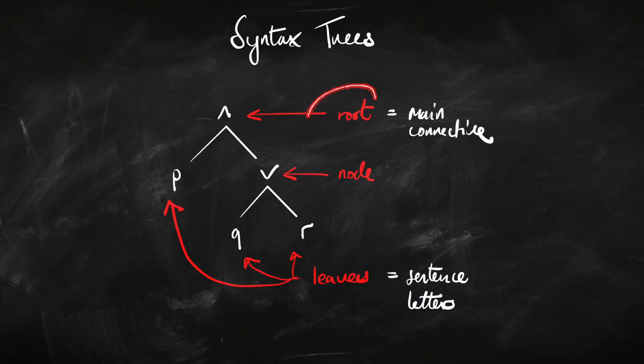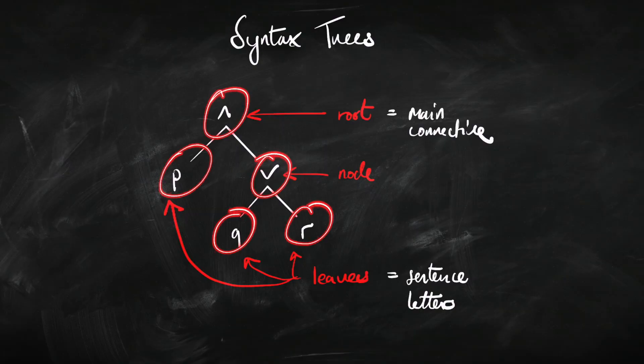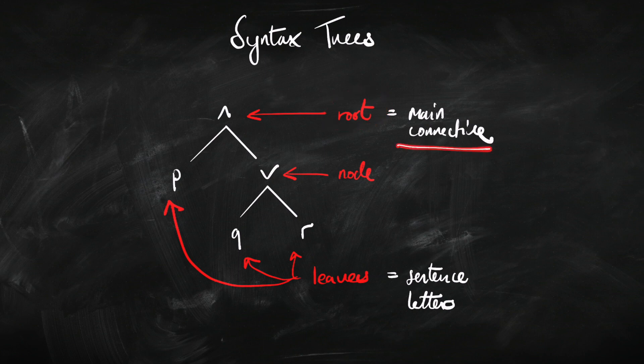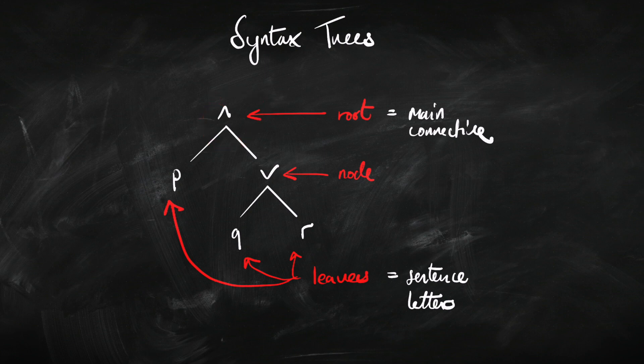Some terminology for trees: the bit at the top is called the root. In logic, trees are drawn upside down, so the root is at the top. The bits where you can't go any further are called leaves, and everything that isn't a line is called a node. In a syntax tree, the root is the main connective of the sentence — that's an important concept. The leaves are always sentence letters, so when drawing a syntax tree you need to deconstruct the sentence all the way down to the P's, Q's, and R's.